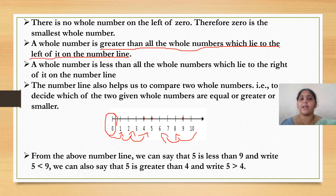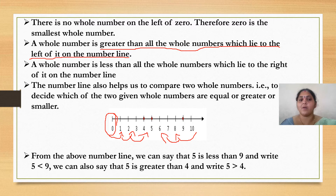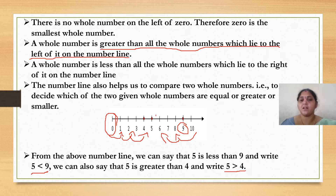The number line also helps us to compare two whole numbers — that is to decide which of the two given whole numbers are equal, greater, or smaller. From the number line, we can say that 5 is less than 9, and we can also say that 5 is greater than 4. 5 is less than 9 because 5 comes first and 9 comes later, so 9 is the larger number. And 5 is greater than 4 because 5 is written after 4.